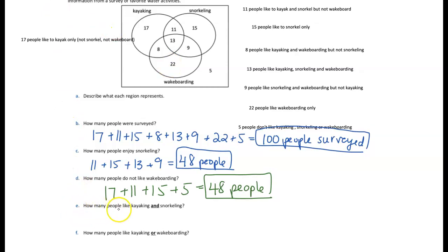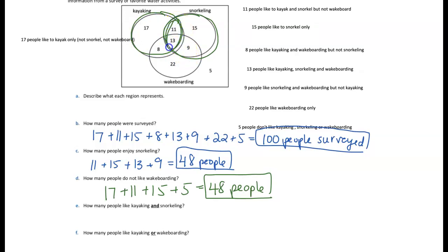Part E: How many people like kayaking and snorkeling? They need to be within both the kayaking and snorkeling sets. That's the overlap region containing 11 and 13. So 11 + 13 = 24 people like both kayaking and snorkeling.